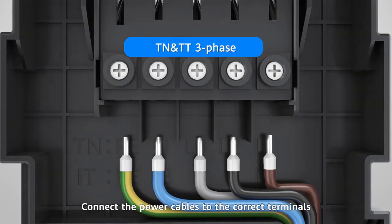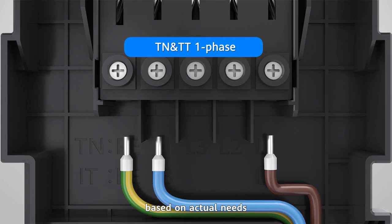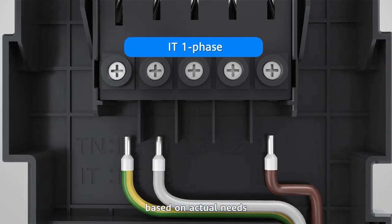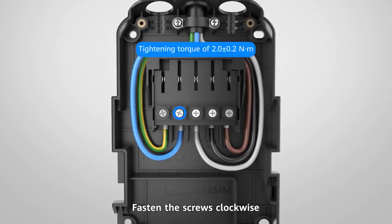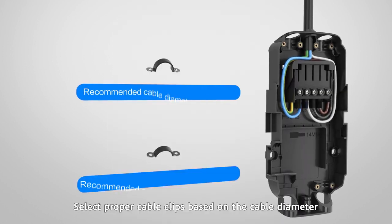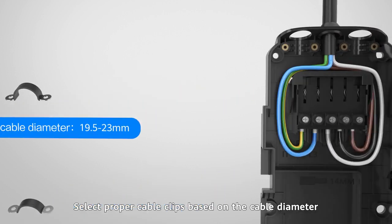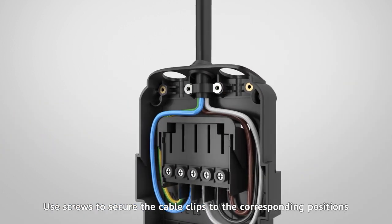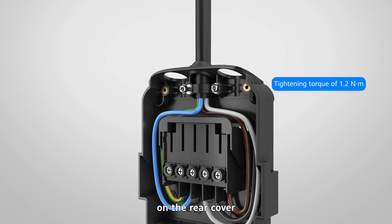Connect the power cables to the correct terminals based on actual needs. Fasten the screws clockwise. Select the proper cable clips based on the cable diameter. Use screws to secure the cable clips to the corresponding positions on the rear cover.